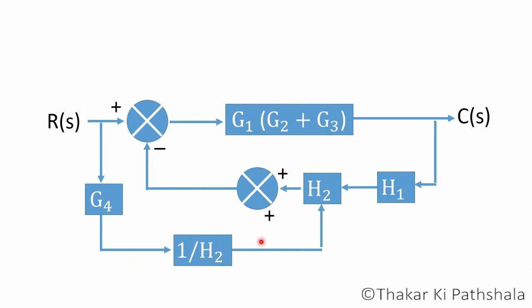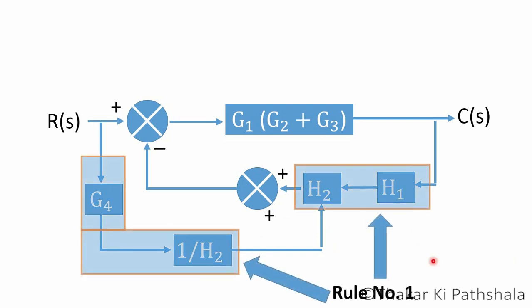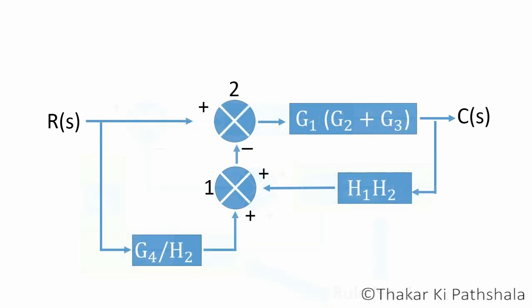Now H1 and H2 as well as G4 and the newly created block are in series configuration. So for blocks in series, we have rule number one which I have stated earlier. After reducing the block diagram with rule number one, we can get this.